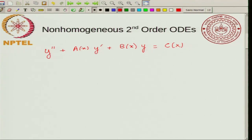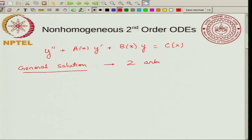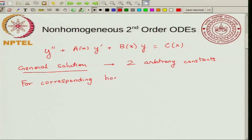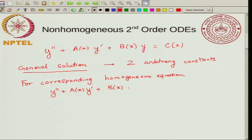A general solution means we will have two arbitrary constants. For the corresponding homogeneous equation, which looks like y'' + a(x)y' + b(x)y = 0, we want to find a general solution with two arbitrary constants.